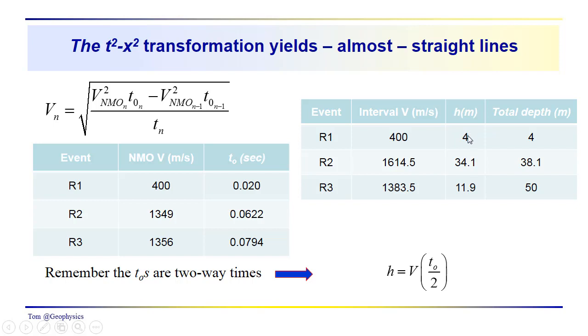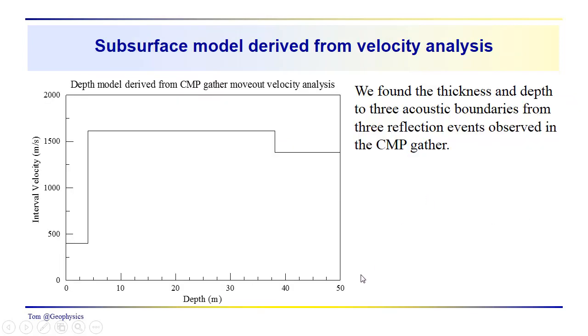The thicknesses we just calculate using the one-way travel times. We have the velocities, we have the T0's, these are two-way times, so we take 0.01 times 400, we get 4. And you're going to do the same thing with layers 2 and 3 to get thicknesses of 34.1 and 11.9. So we're just substituting into this expression over here. And then that's going to give us total depths of 4, 38, and 50, so the bottom of our model is going to be around 50 meters.